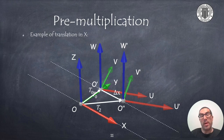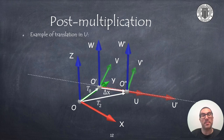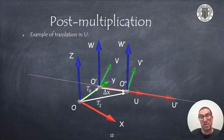We will now see some examples that will allow us to visually understand the implications of different translation and rotation operations. In this first example, we will see the result of applying a translation with respect to the x-axis, obtaining the reference frame OUVW'. On the other hand, if the translation is made with respect to the u-axis of the mobile reference frame, the same operation will have a different translation result. In this case, we must perform a post-multiplication operation.